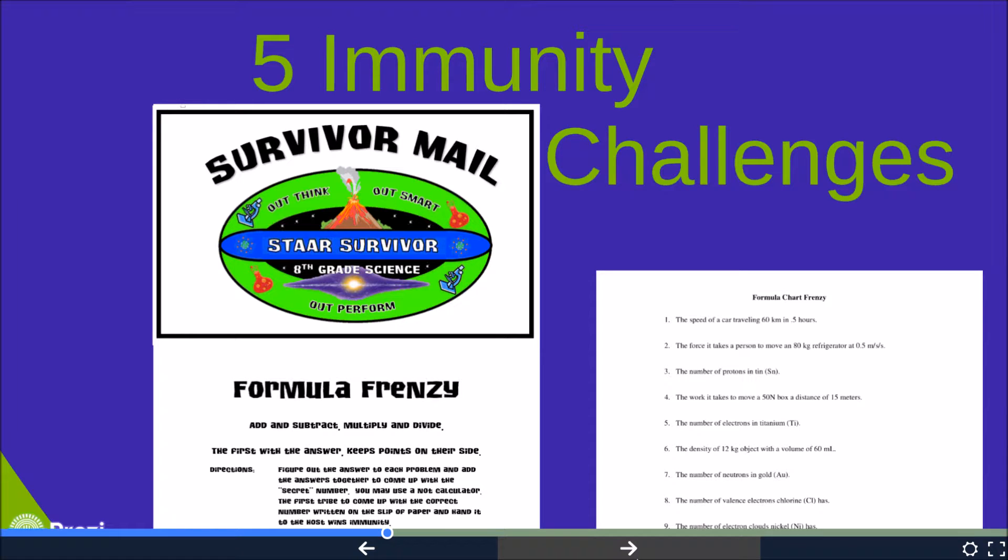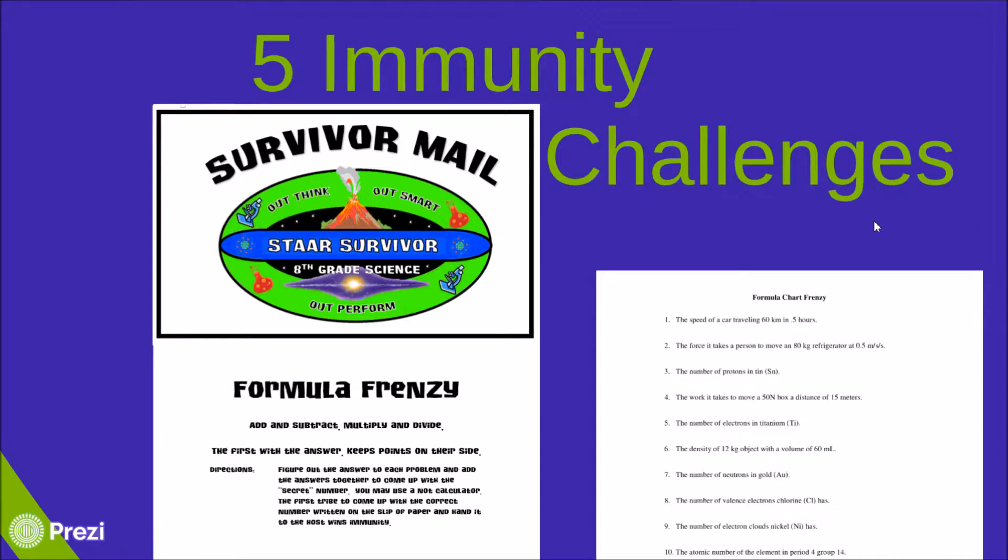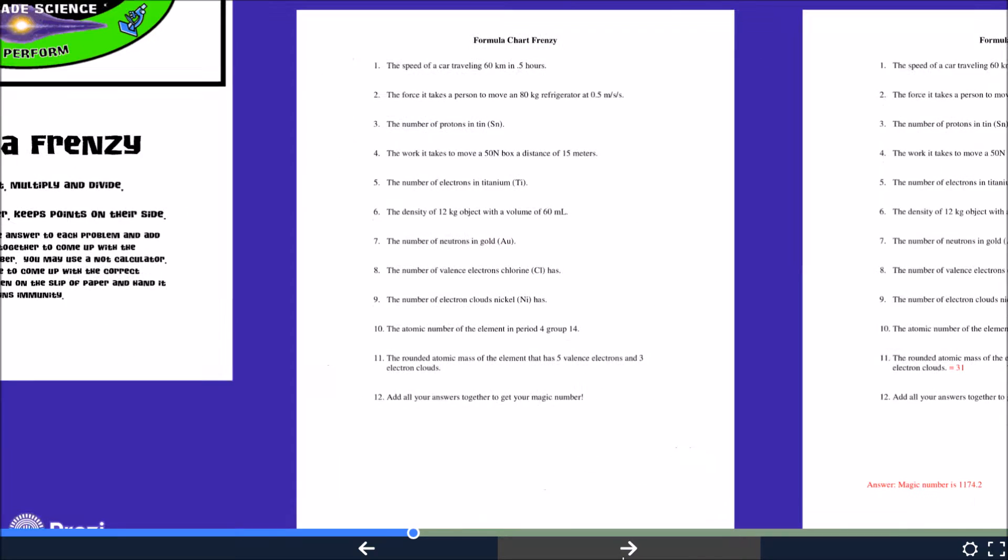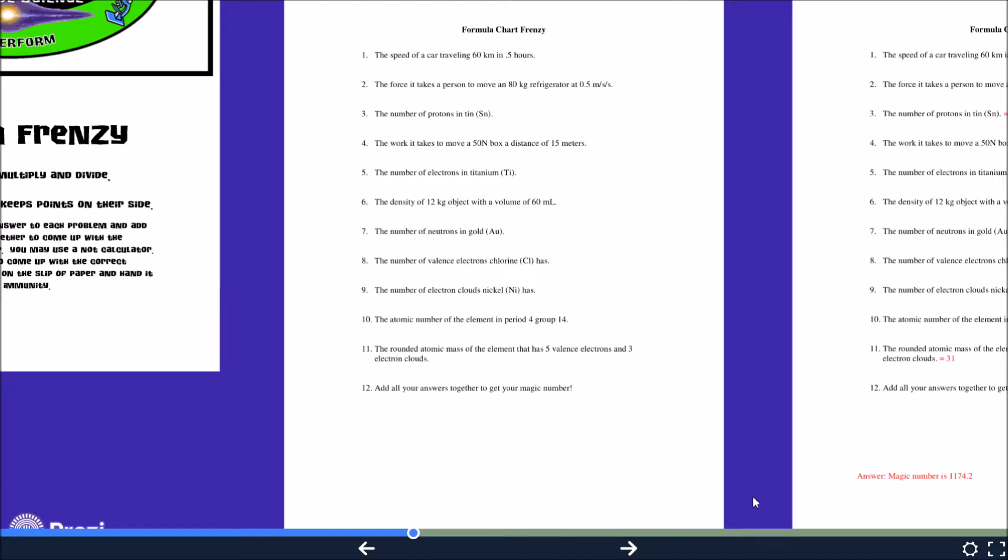The third day of the three-day objective cycle involves an immunity challenge. There are five total immunity challenges throughout the course of Survivor. Students will enter on the third day and find a survivor mail message in a designated location. This message has the directions for the immunity challenge that the tribe will compete in. In this case, it's called Formula Frenzy, which uses the formula chart that students have on the STAR test. The message says: add and subtract, multiply and divide, the first with the answer keeps points on their side. Students will then report to a designated area in the classroom and see the Formula Frenzy worksheet. They will answer the question, write the answer to the right, and go down the line following each number. Number 12 instructs them to add all of their answers together to get a magic number. For example, in number one, the speed of a car traveling 60 kilometers in point five hours gives the students the answer of 120 kilometers per hour. That number will be added to the answers in numbers two through 11.